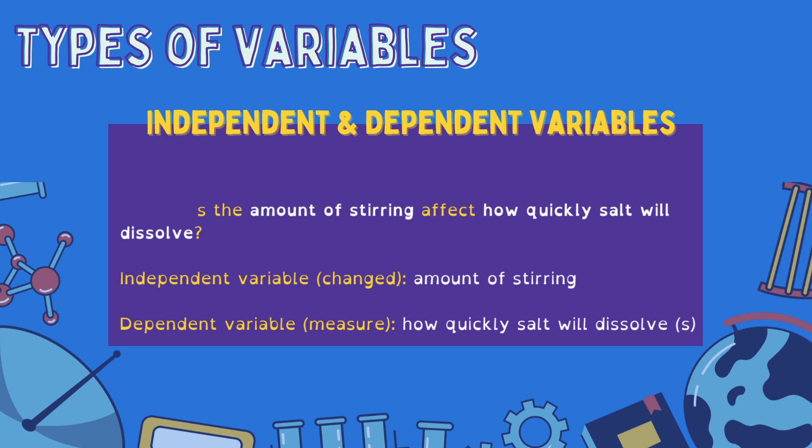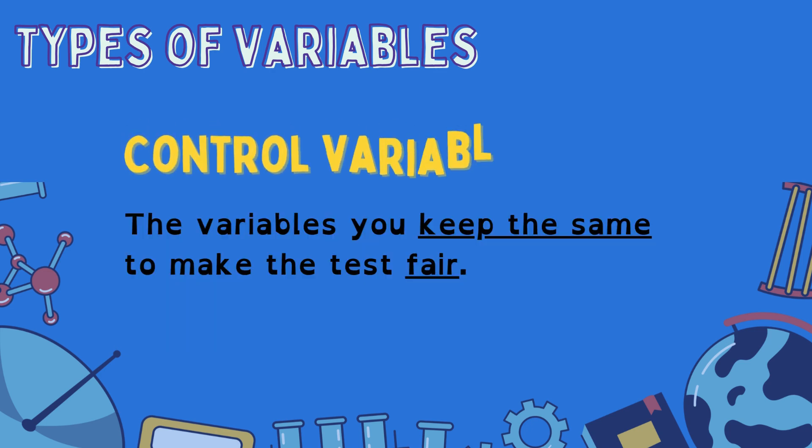Now let's look at that third variable: the control variables. These are the variables that we keep the same in an experiment. We control them to make the test fair, ensuring they stay the same throughout.